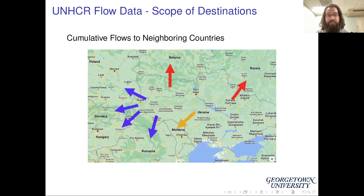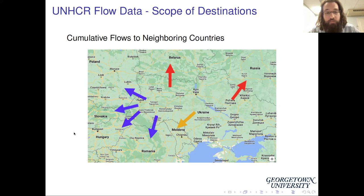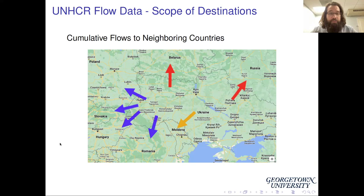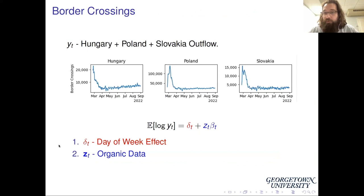Despite the international nature of this event, we're going to focus on just a few of Ukraine's neighbors. The blue arrows on the map represent movement from Ukraine to its four European Union neighbors. The orange line represents flow to Moldova, and then we also have individuals moving to Belarus and Russia. Data availability varies country to country — we have better access to data for individuals moving into European Union countries than into Russia or Belarus.